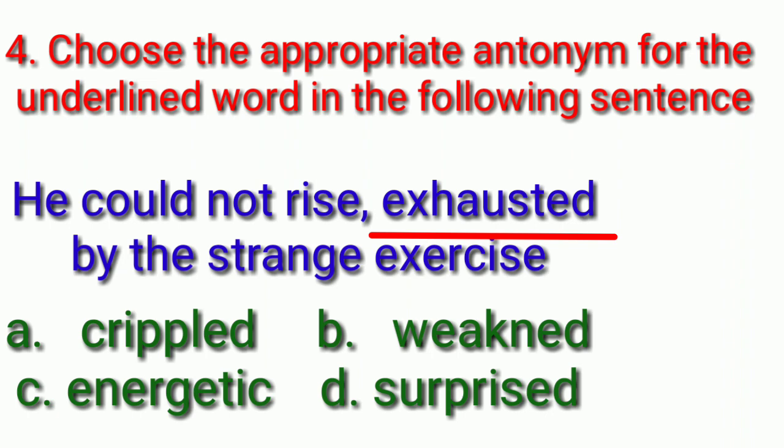Fourth question. Choose the appropriate antonym for the underlined word. He could not rise, exhausted by the strange exercise. And the underlined word is exhausted. Your options are crippled, weakened, energetic, surprised. Your countdown starts. And the answer is energetic. Exhausted means tired, opposite is energetic.